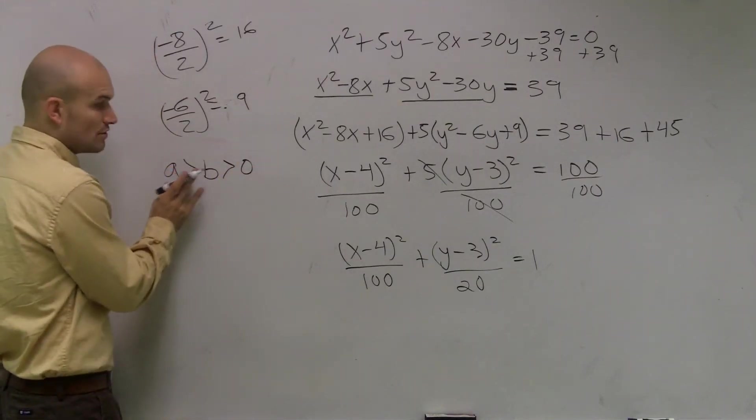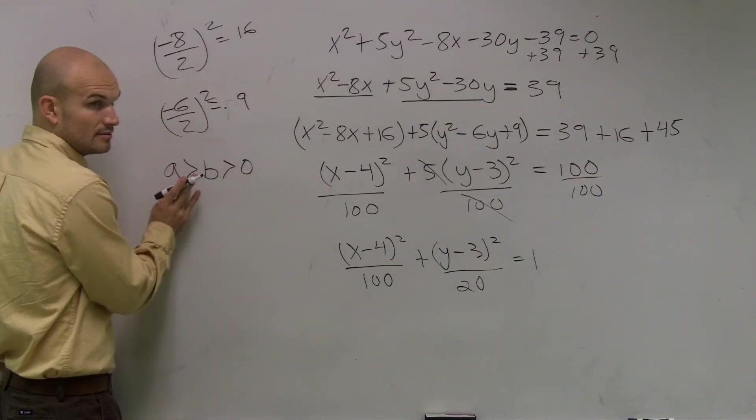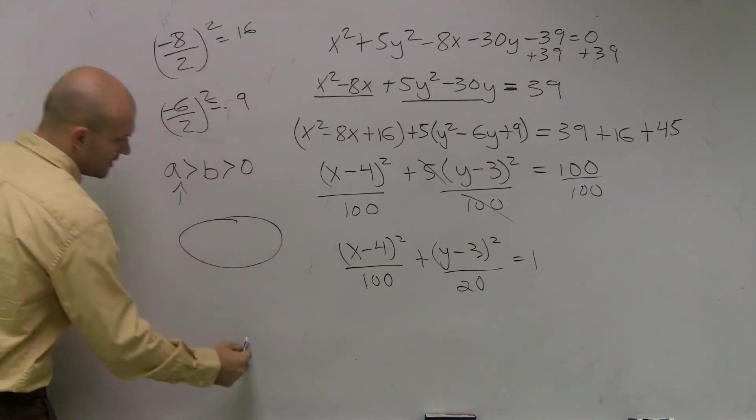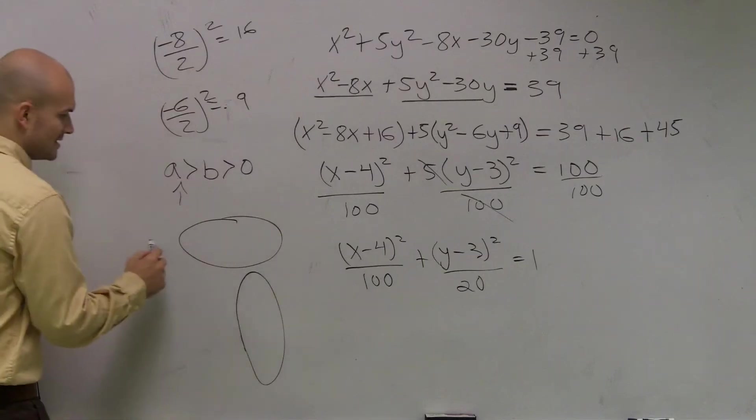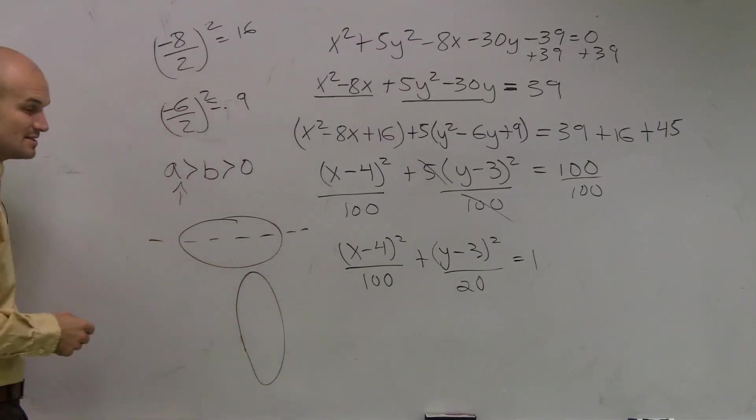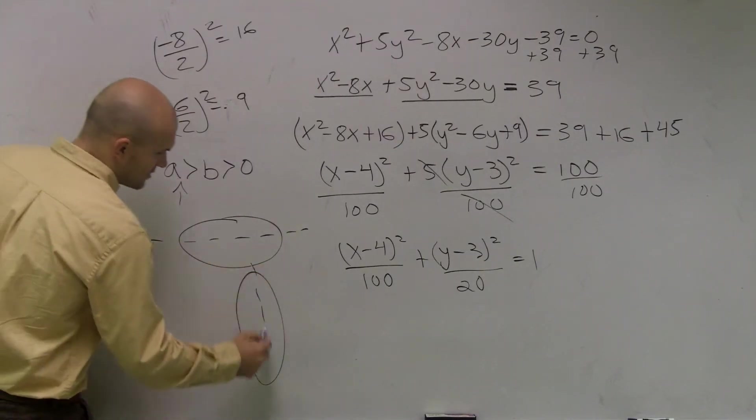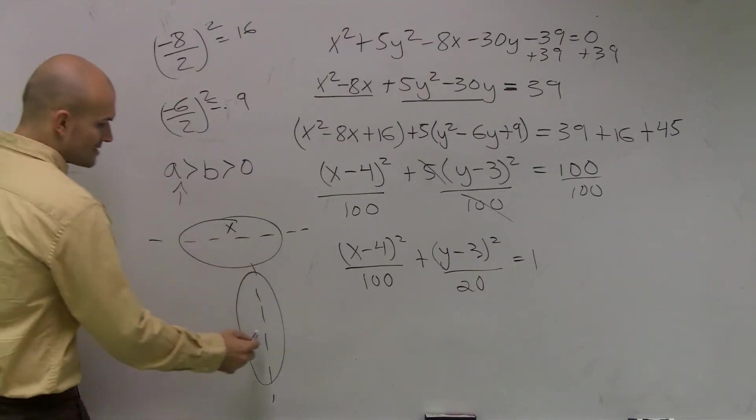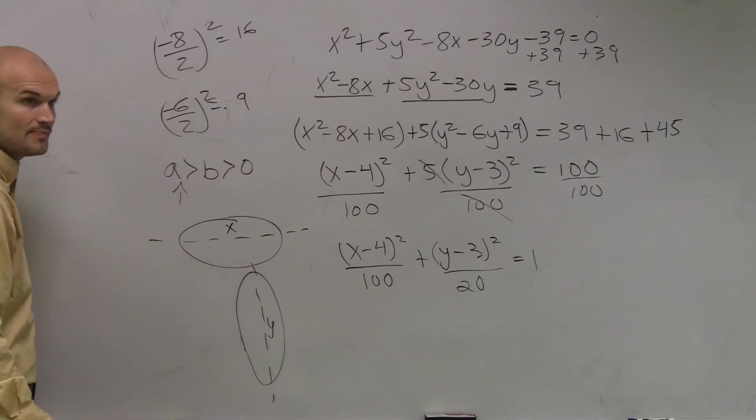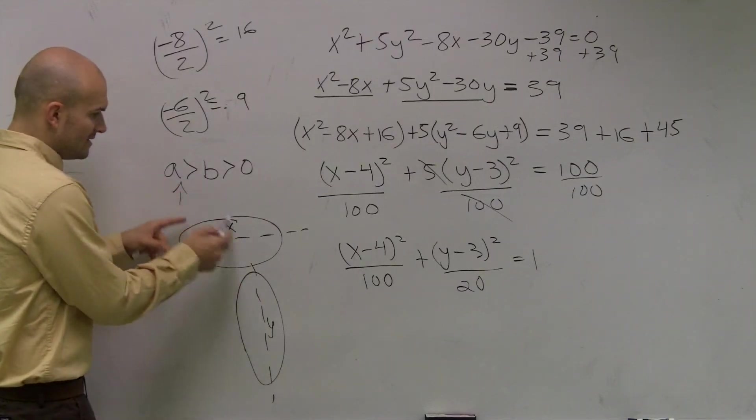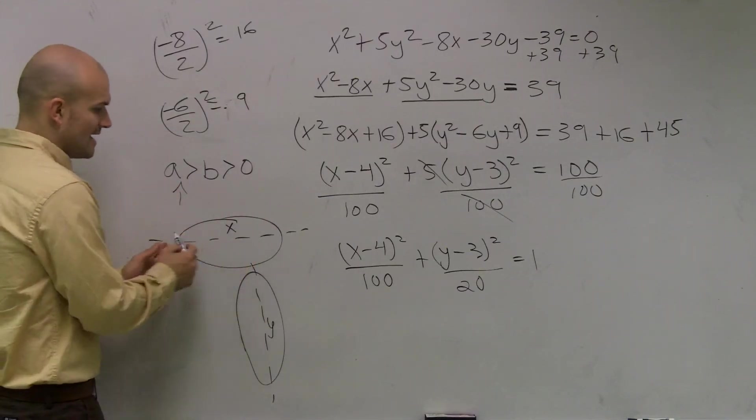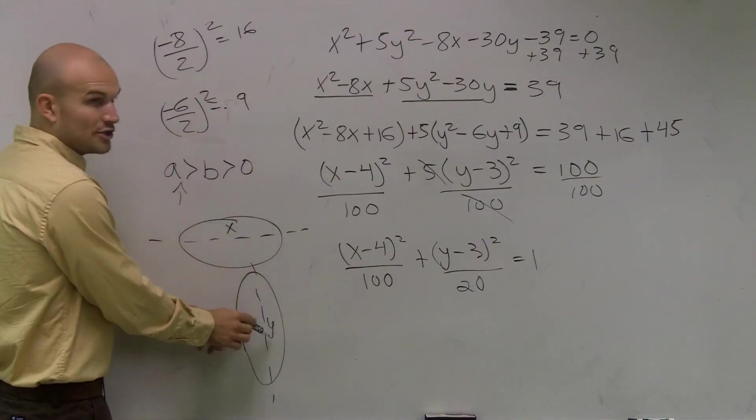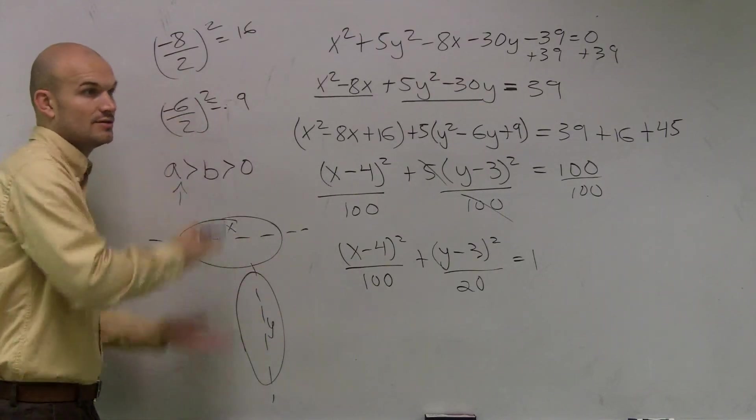Remember our form, our a is always larger than our b, right? Always. Well, there's only two options. You have an ellipse that's going to have a major x-axis, or a major y-axis, right? This is your x, that is your y, right? If this a is larger under the x, that's going to stretch it horizontally. If it's under your y, it's going to stretch it vertically.